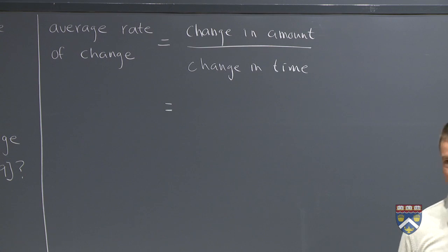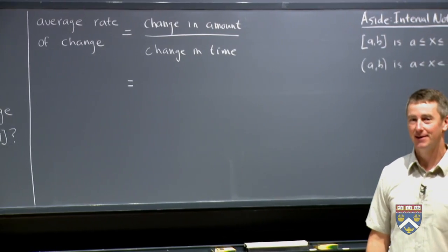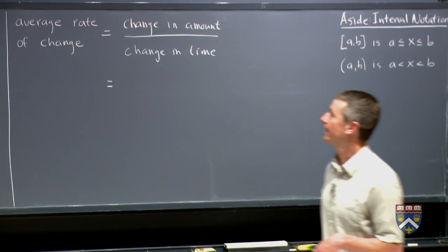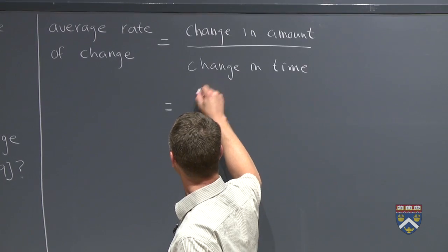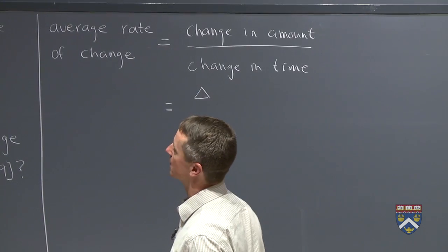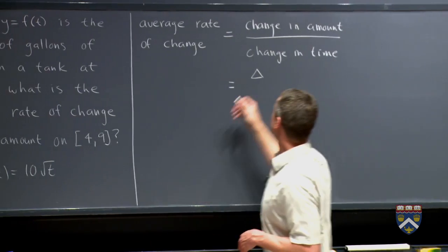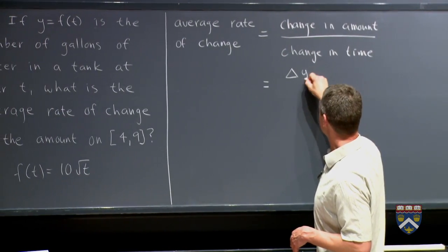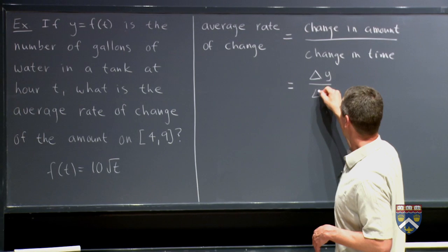In calculus, we're going to have lots and lots of times we're going to say change in. So we abbreviate that with a Greek letter, the Greek letter capital delta. So in this case, since our function is y, the change in the amount is measured in y. So that's change in y over change in x. And this is the capital Greek letter delta.